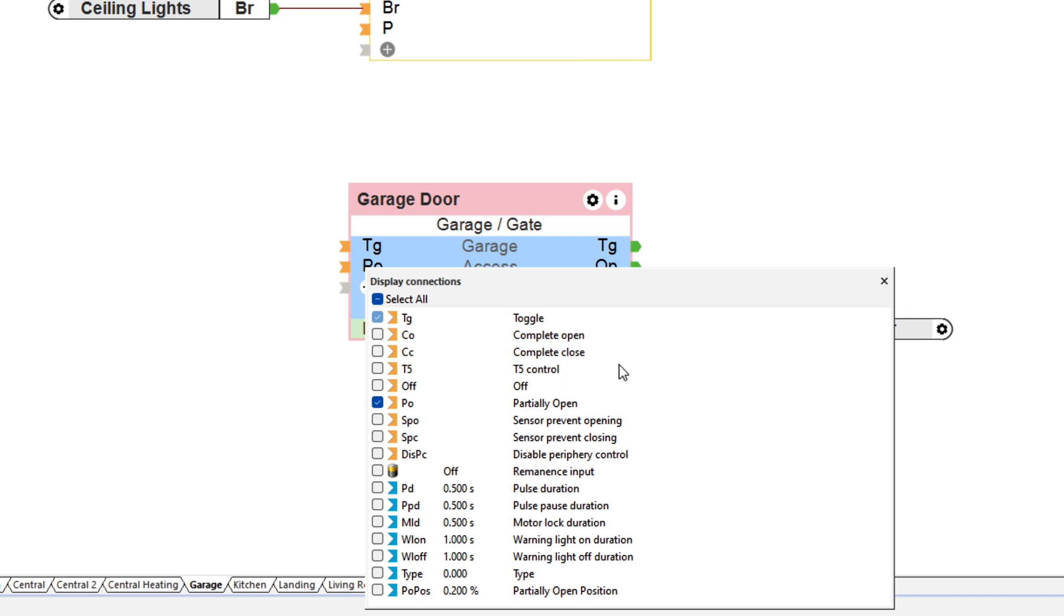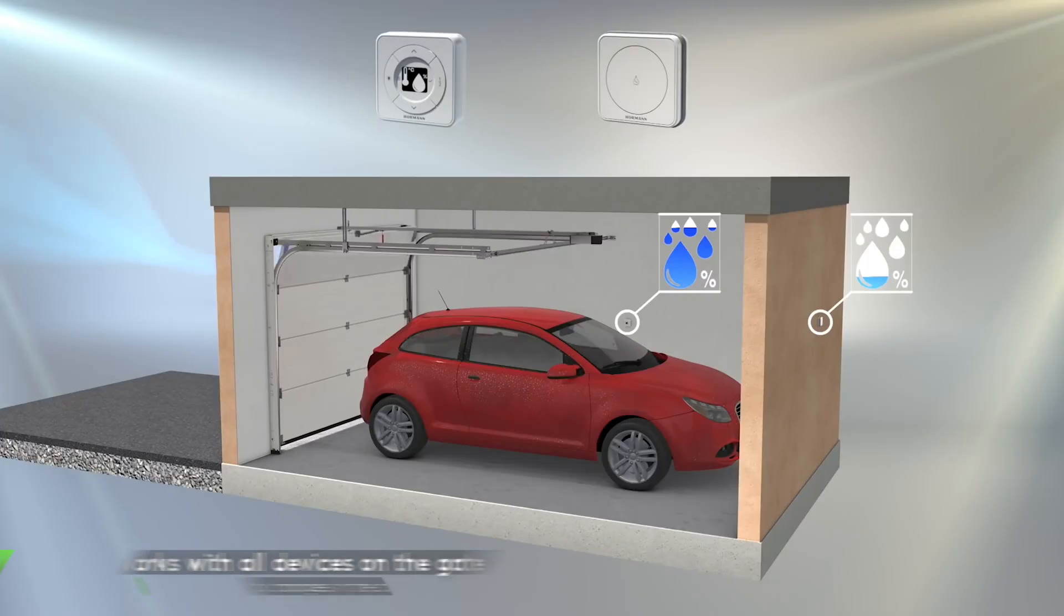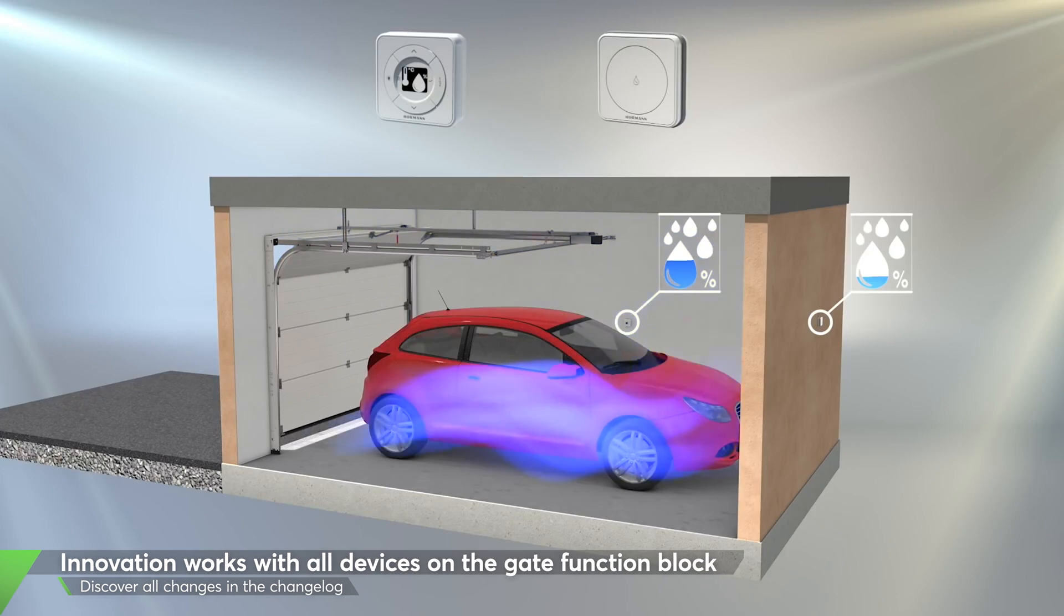The Loxone Herman Air enables Herman garage doors and operators to be integrated into the Loxone system. As a new feature, you can now set a ventilation position for the door of the Herman Air, both via the config and the Loxone app.